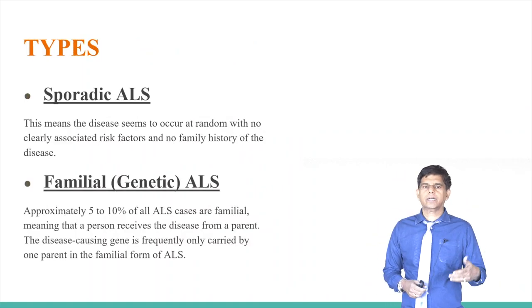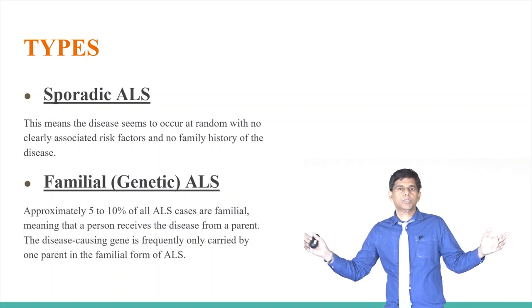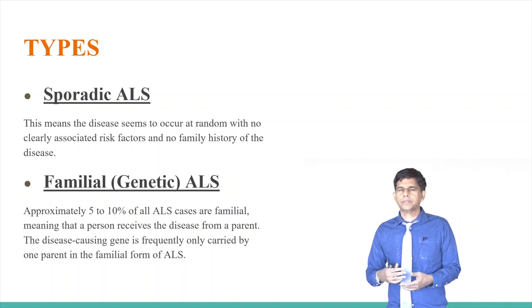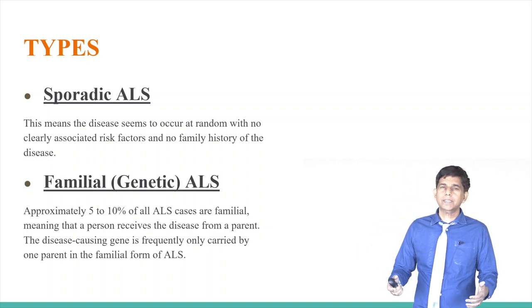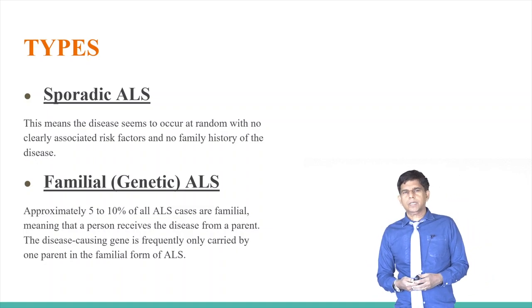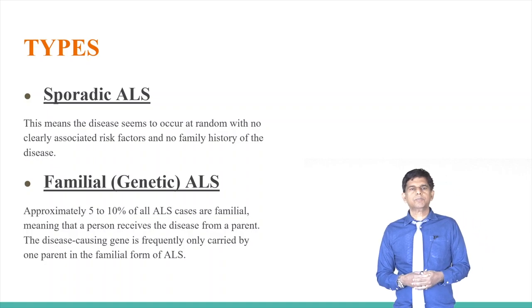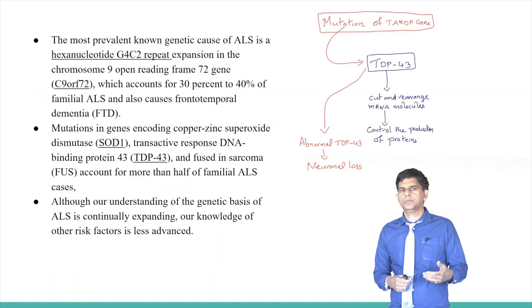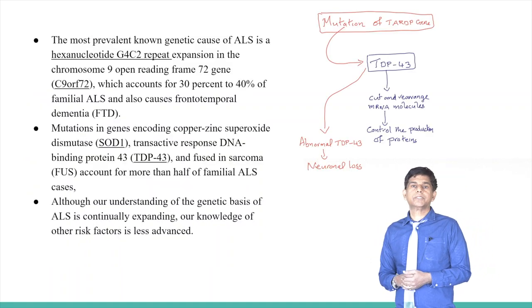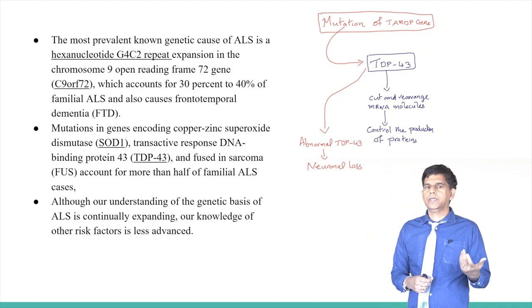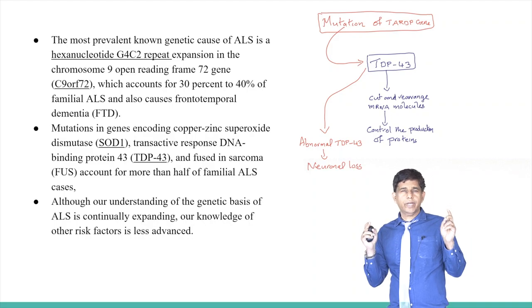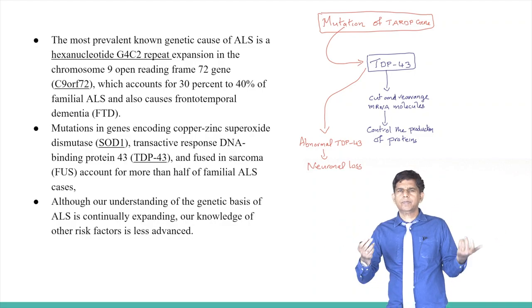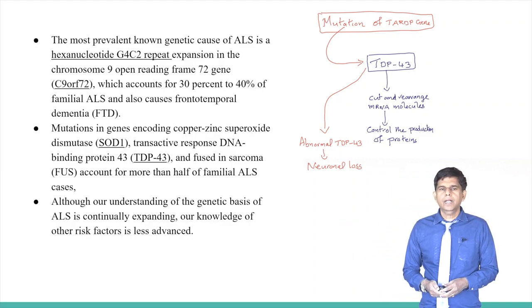There are two types of ALS. Sporadic occurs without any known reason, and familial is genetic — caused by genetic mutations. Familial ALS accounts for roughly 5 to 10 percent of cases, though some studies suggest up to 30 percent. The most prevalent genetic mutation is a hexanucleotide G4C2 repeat expansion on chromosome 9. There are also mutations in copper-zinc superoxide dismutase SOD1, which can affect the important protein TDP-43.